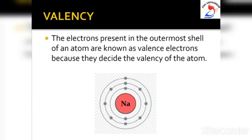The outermost electron shell of an atom is known as the valence shell. The electrons present in the outermost shell are known as valence electrons, because they decide the valence — that is, the combining capacity — of the atom. Only the valence electrons take part in chemical reactions, as they have more energy than all the inner electrons.